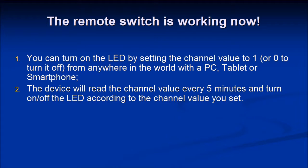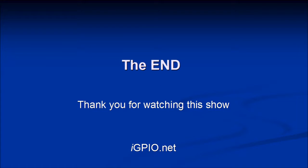At this point, the remote switch should be working. You can turn on the LED by setting the channel value to 1, or to 0 to turn it off, from anywhere you have internet access — a PC, tablet, or smartphone. In this example, the Raspberry Pi will read the channel value every five minutes and turn the LED on or off according to the value you have set. Thank you very much for watching this video. We hope you enjoyed it.